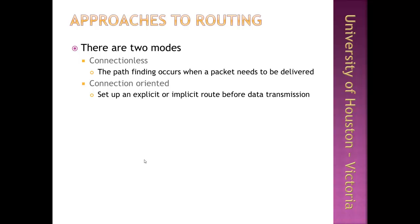Routing from a source to a destination can take place over two different methods: connectionless mode or connection-oriented mode. In connectionless mode, the pathfinding algorithm is executed every time a packet needs to be delivered, using current knowledge of network topology to find different hops toward a destination. Each packet might find its way independently of other packets, and every packet needs to carry the final destination IP address so each intermediary node can evaluate where to send it next. The internet protocol is an example of connectionless routing.